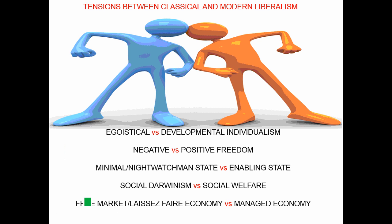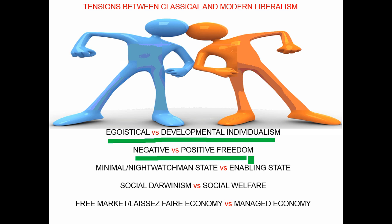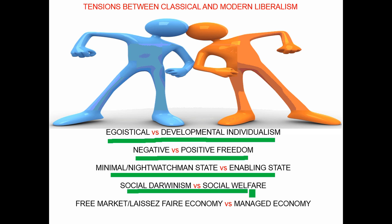Comparing modern and classical liberalism, we can see that at the very least there are tensions between them, and some argue that modern liberalism has abandoned classical liberal thought by embracing collectivism and abandoning individualism. These tensions can be examined in turn: egoistical versus developmental individualism, negative versus positive freedom, a minimal night-watchman state versus an enabling state, social Darwinism versus social welfare, and the free market versus the managed economy.